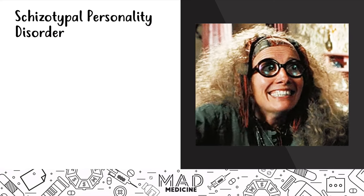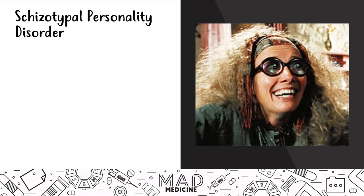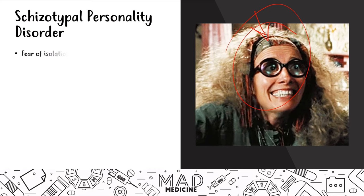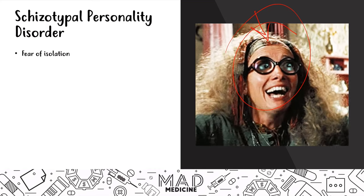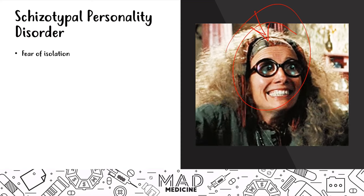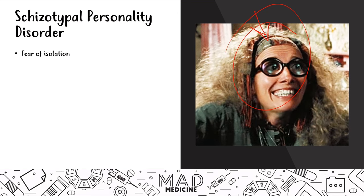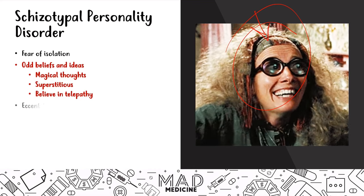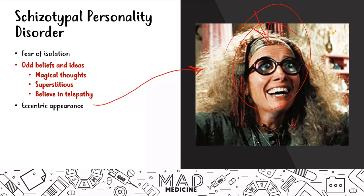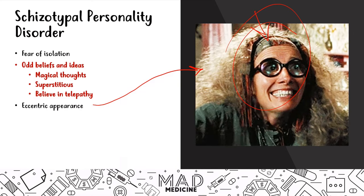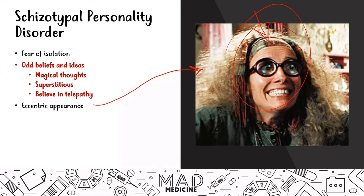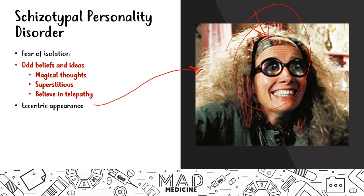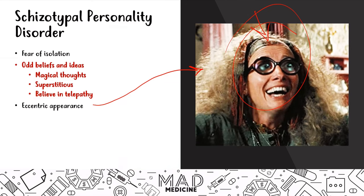Now for our final personality disorder: schizotypal personality disorder. These people are just weird — this is really the defining Cluster A 'weird personality.' Unlike schizoid, schizotypal patients have a fear of isolation — schizoid and schizotypal are completely inverse. Schizotypal patients hate being alone. They have odd beliefs and ideas: magical thinking, superstitions, belief in telepathy, and they're very eccentric in appearance. They may believe in charms or crystals having healing powers.